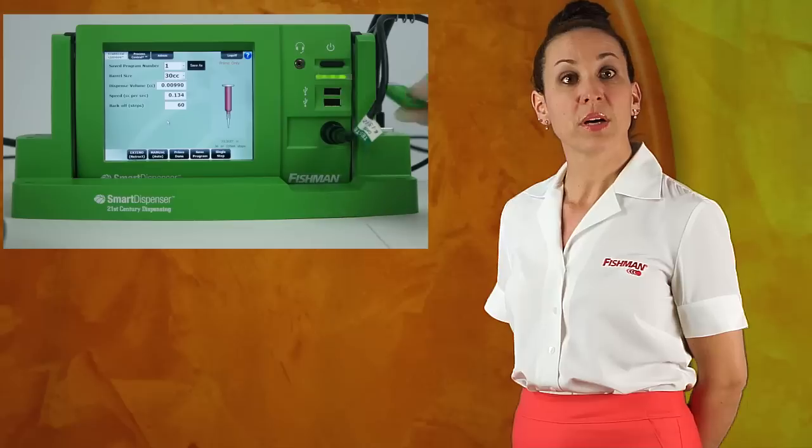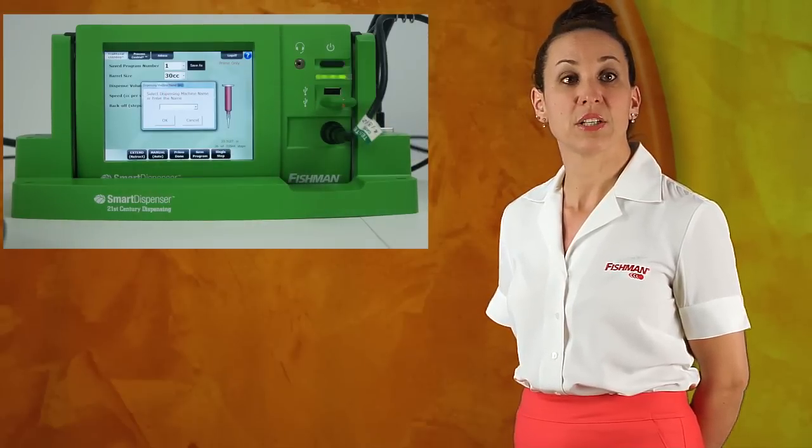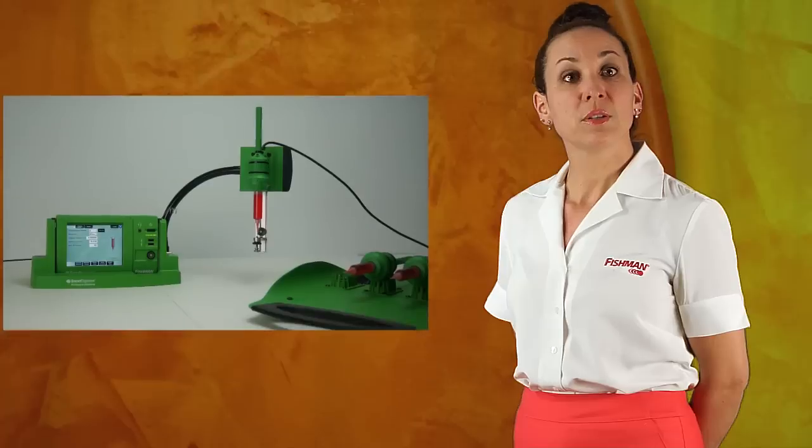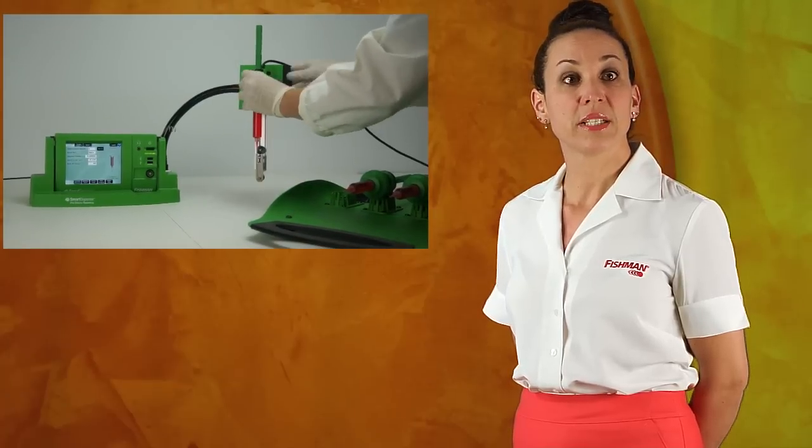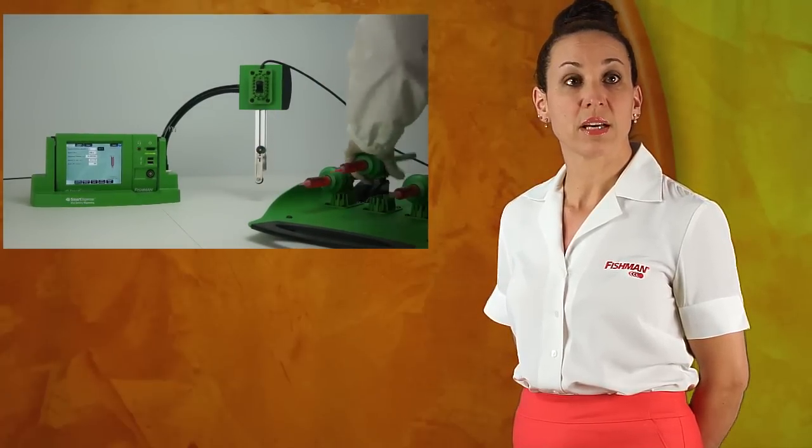When the priming process is complete, transfer the step count from the Smart Dispenser Priming Station to the Smart Dispenser USB memory stick. Remove the dispense gun from the priming station, placing it in the gun tray, and load the next dispense gun for the priming process.